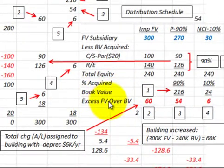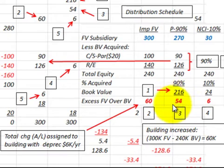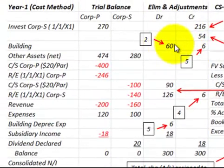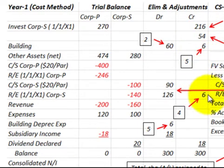Next we handle the excess of fair value over book value — a total of $60,000 assigned to a building that increased in value by $60,000, with depreciation expense of $6,000 per year. 90% is assigned to the parent for $54,000, and the remaining 10% goes to the non-controlling interest for $6,000. The entry debits the building account for $60,000, credits the investment in subsidiary by $54,000, and credits the subsidiary's retained earnings for $6,000.